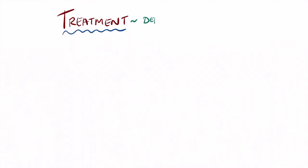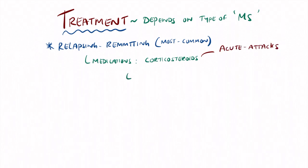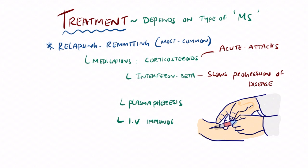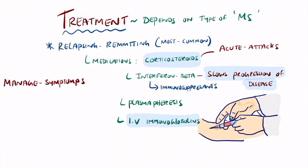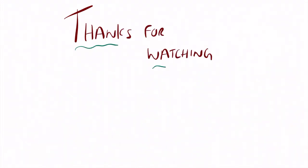Treatment includes various options depending on the type of MS. In the most common relapsing-remitting type, corticosteroids are administered during acute attacks. Interferon beta, which is an immunosuppressant, can be given to slow disease progression. Plasmapheresis and IV immunoglobulins are additional options. Key points: corticosteroids and IV immunoglobulins for acute management; interferon beta immunosuppressants to slow progression. Symptom management for depression, bladder dysfunction, and cognitive rehabilitation should also be addressed.